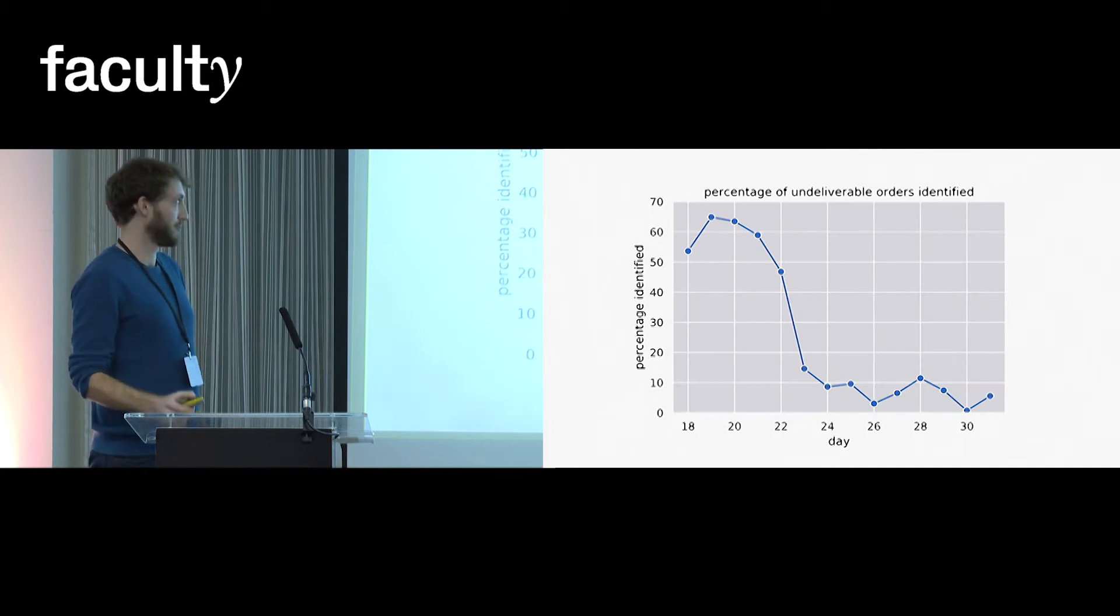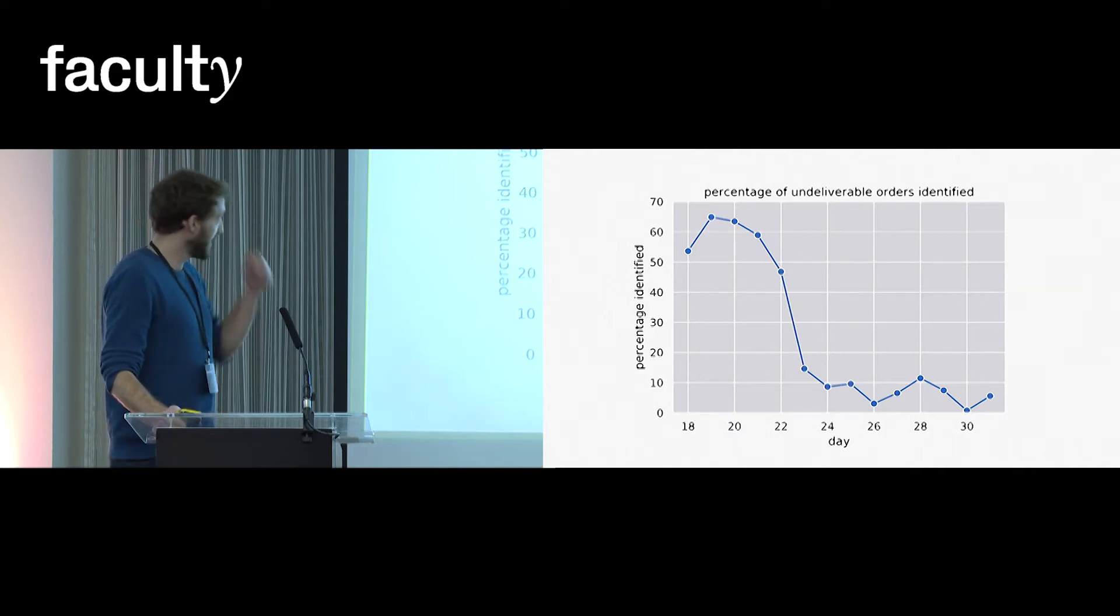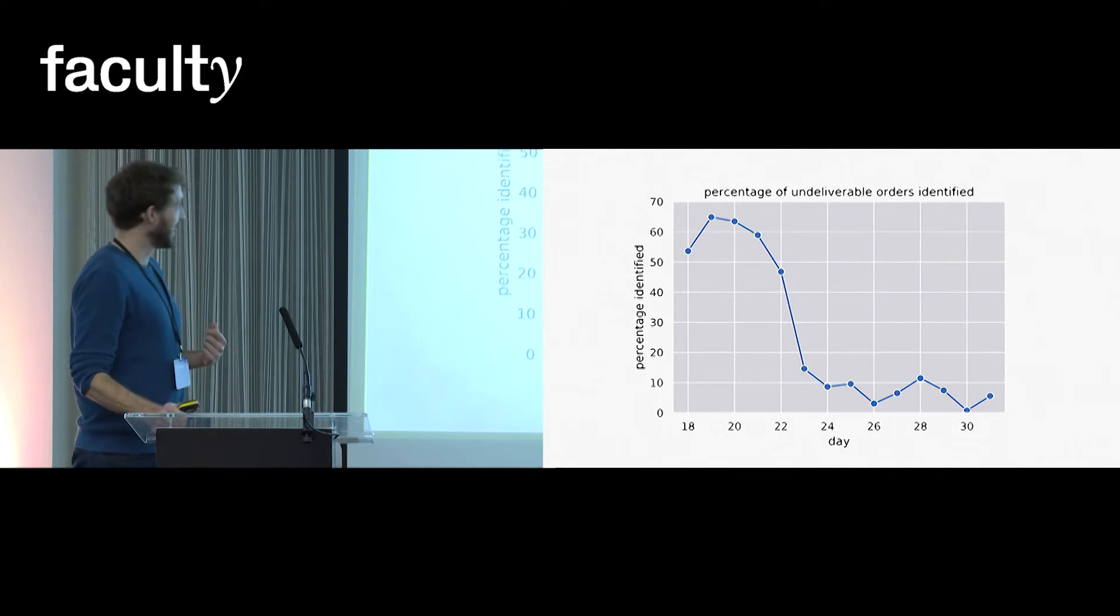Now, when it came to testing the performance, things didn't go quite how I wanted. So this graph here shows the percentage of undeliverable orders that my algorithm successfully identified for each day in the month. And what we can see here is that at the beginning of the month, the algorithm does particularly well.